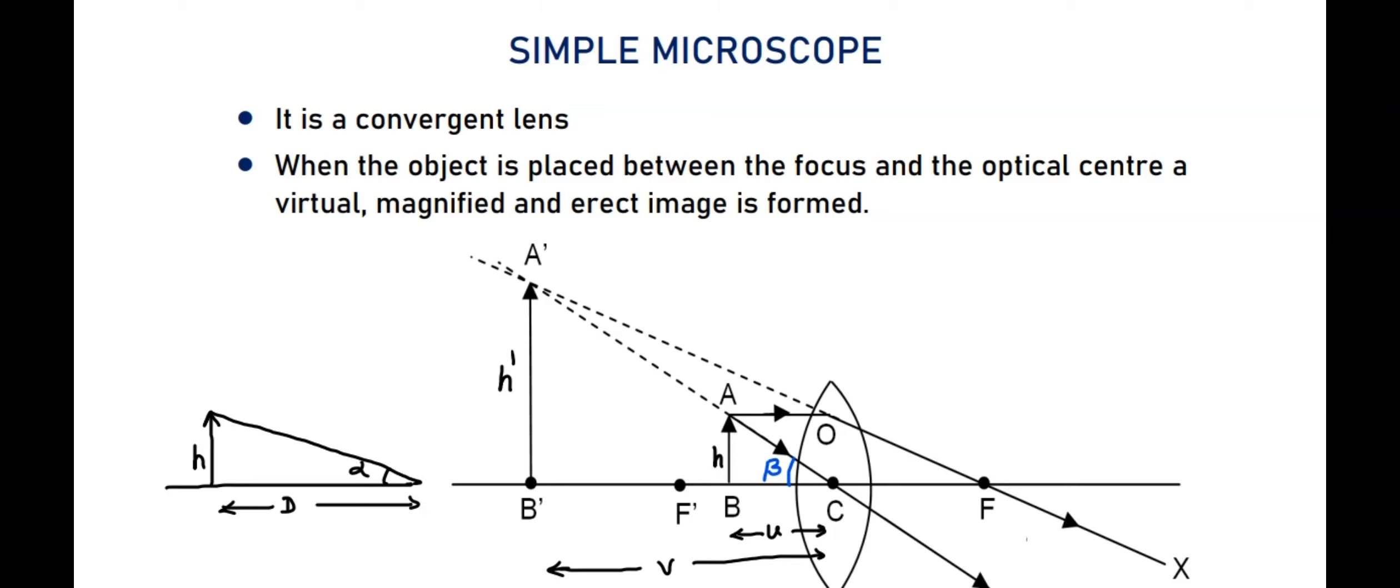Simple microscope is nothing but a convergent lens or a convex lens. What is the principle behind this? When the object is placed between the focus and the optical center, a virtual magnified and erect image is formed.